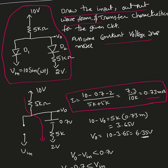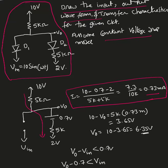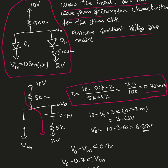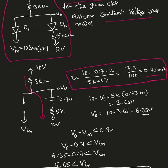I found the current as 0.73 milliamperes passing through this circuit when D1 is open and D2 is closed. Now the goal is to find V_out. So 10 minus V_out equals 5k times I, which gives V_out equal to 6.35 volts.